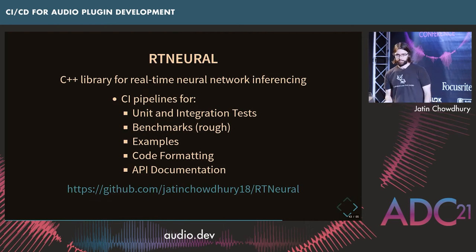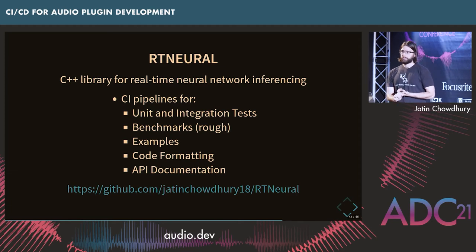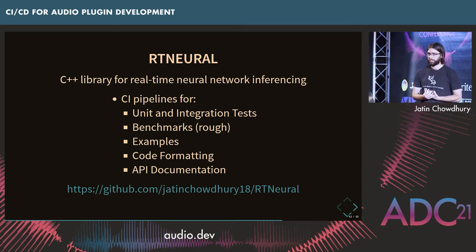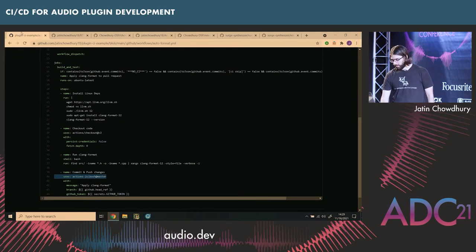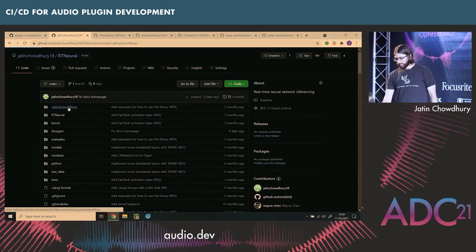As an example of a library — this is a normal C++ library, not related to JUCE or anything like that, and doesn't need to be used for plugins specifically. For this project I have a few CI pipelines: one for running unit tests and integration tests, one for running rough benchmarks, one for making sure example projects in the repository build and run correctly, a similar code formatting pipeline, and I actually generate the API documentation from a CI pipeline as well.